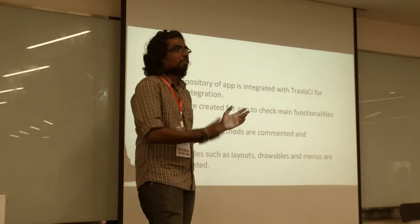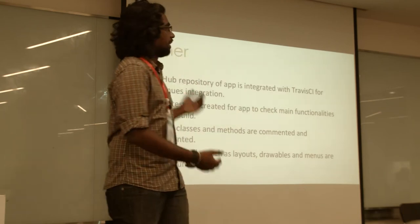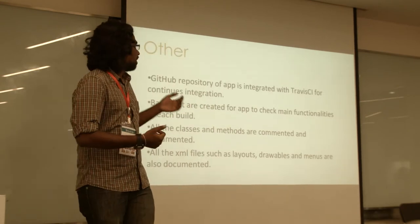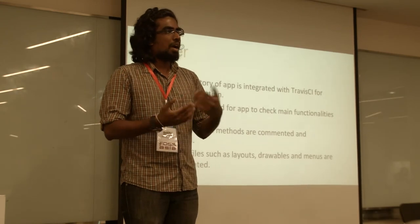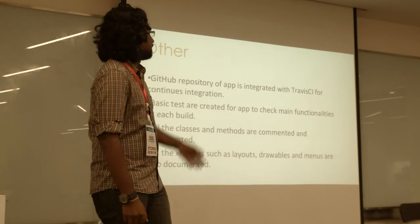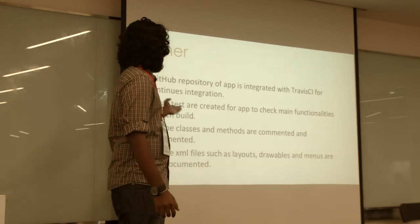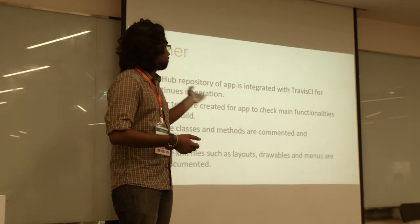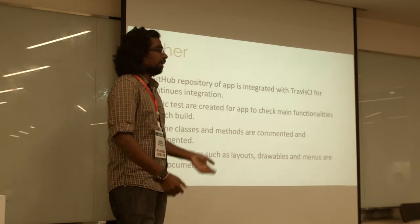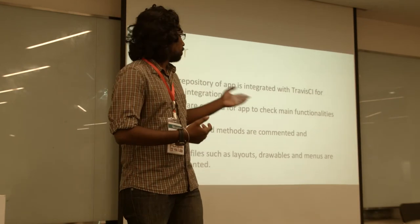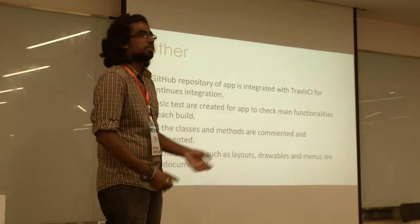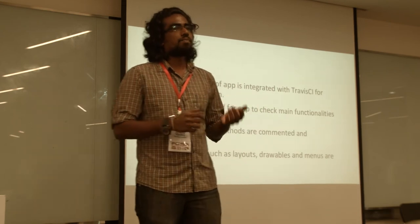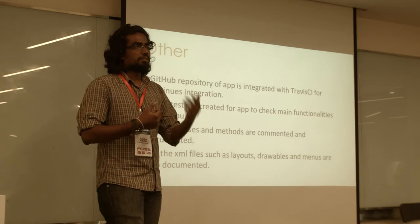These next points are for developers. We need more developers on our project — it's currently really young and not yet mature. We have our GitHub repository linked with Travis CI for continuous integration, and we have all the basic tests created for the Android app. Anyone can fork the repo, put in a PR, and it will automatically run the tests. All the classes, XML files, and designs are well documented, so anyone can easily set up the project and work on it.